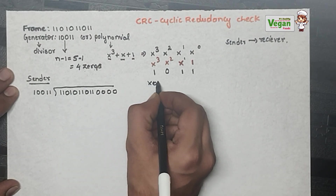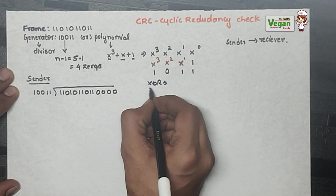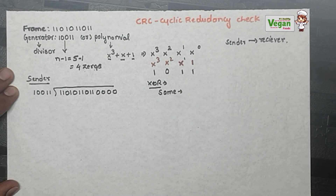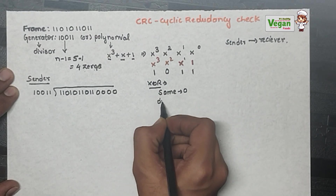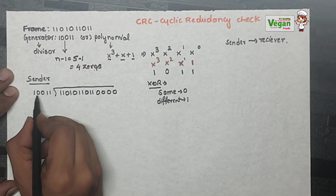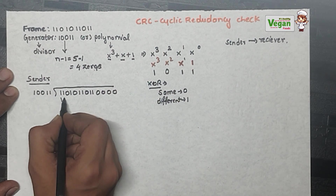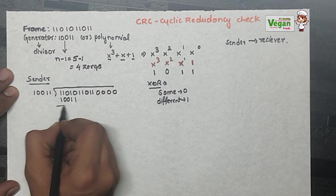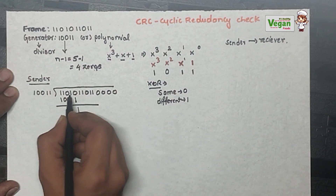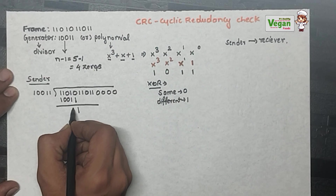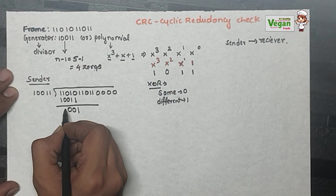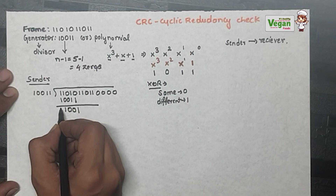For division we use the XOR gate. XOR rule: if two inputs are the same, output is 0; if inputs are different, output is 1. Dividing the frame by the divisor 10011: 0 XOR 1 = 1, 1 XOR 1 = 0, 0 XOR 0 = 0, 1 XOR 0 = 1, 1 XOR 1 = 0. For the next step, we must start with 1 — zeros at the front are not considered.